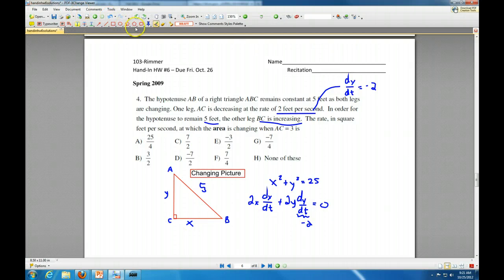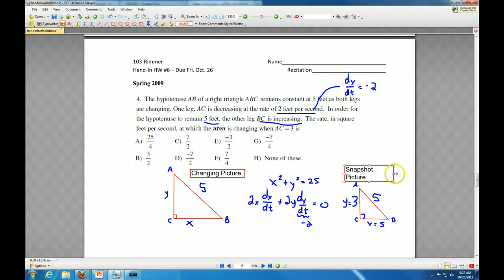And we do need a snapshot. At the instant where AC is 3. So we have AC is 3. This is our snapshot picture. Here A, B, and C, right triangle. And AC is 3. AB is stuck on 5. Hopefully you recognize it as a 3, 4, 5. So at the snapshot, Y is 3 and X is 5. That's our snapshot picture.